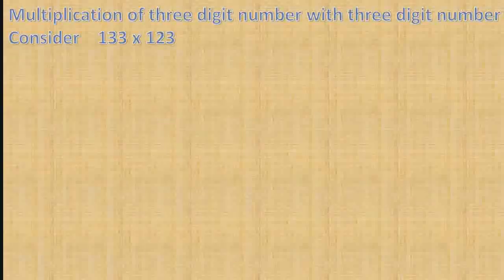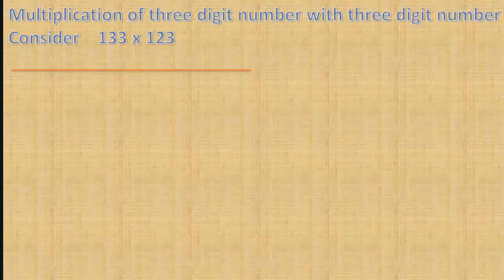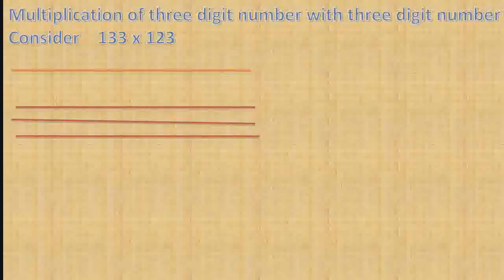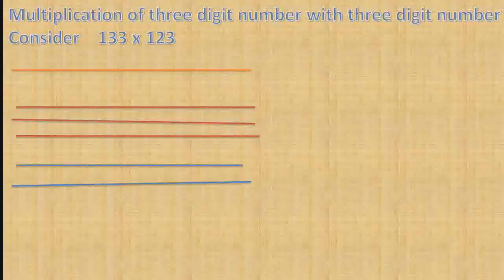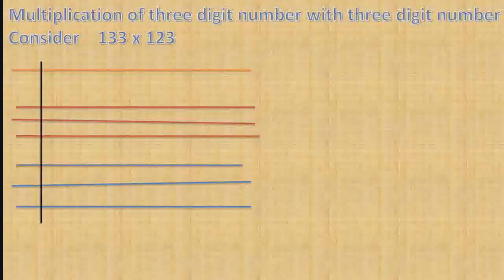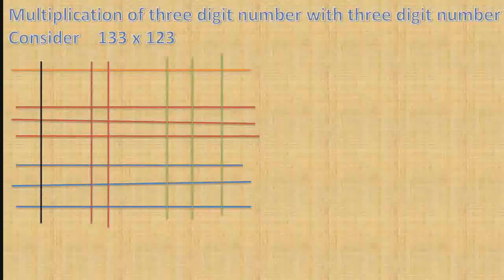Now we see the multiplication of 3 digit numbers with 3 digit numbers: 133 multiplied by 123. For the number 133, draw one horizontal line. By leaving some space, draw three horizontal lines. Again by leaving some space, draw three horizontal lines. For number 123, draw one vertical line. By leaving some space, draw two vertical lines. Again by leaving some space, draw three vertical lines.